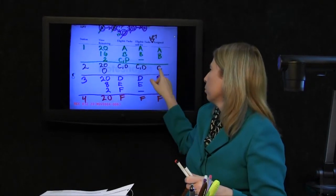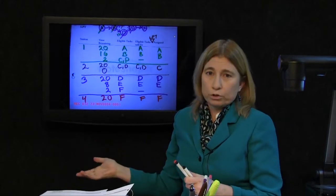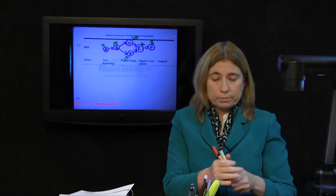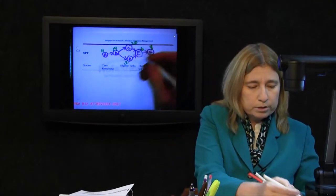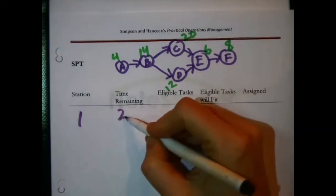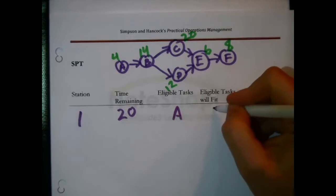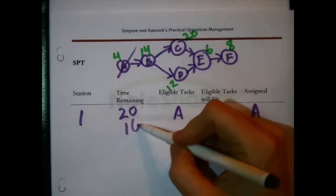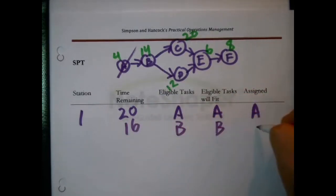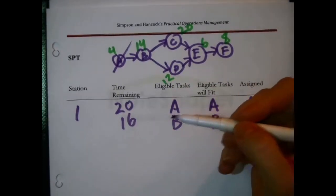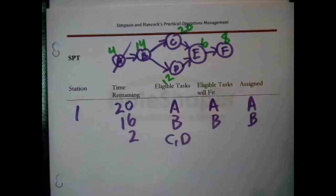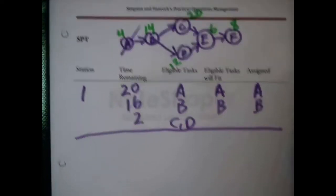Here is the design according to longest processing time: 4 workstations. Now we compare that to the design using shortest processing time. It's a repeat exercise. The first workstation is identical — we always have to do A first, then B becomes eligible and fits. That knocks time down to 2 seconds, at which point C and D are eligible but don't fit. The first workstation looks just like last time.